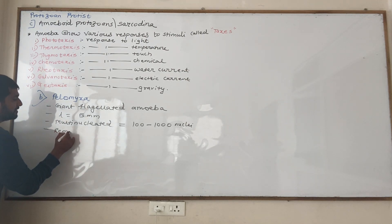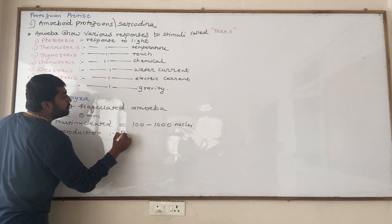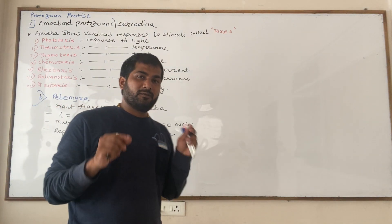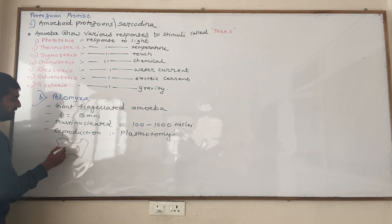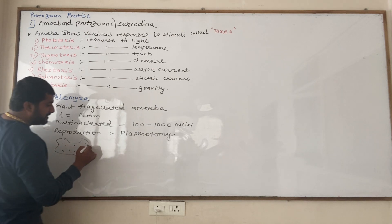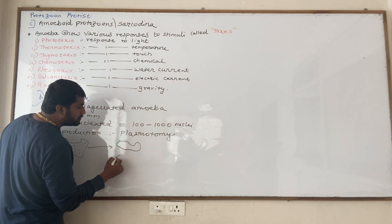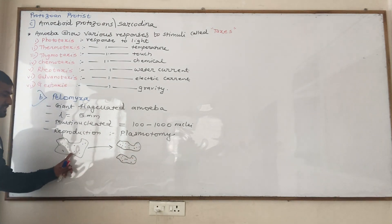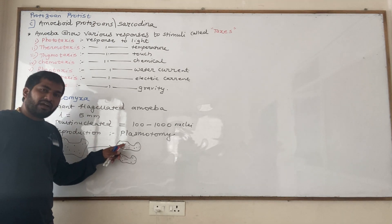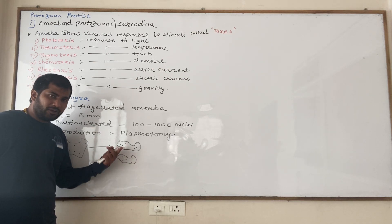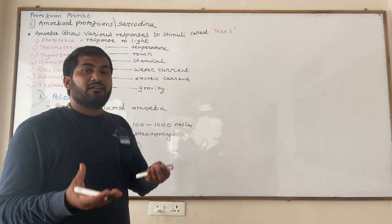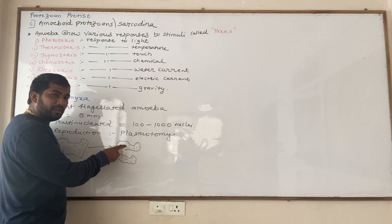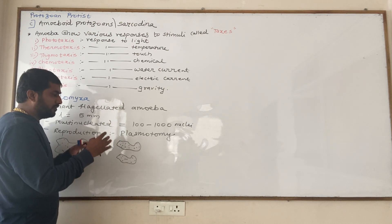Pelomyxa reproduces by plasmotomy. Plasmotomy involves division of the plasma membrane. If this Pelomyxa has hundreds of nuclei, the cytoplasm gets divided to form two new smaller daughter amoeba. If the parent amoeba has 100 nuclei, the daughter cells may have 40 and 60, or 50 and 50, or any distribution. The nuclei count will be restored by further division of the nucleus.